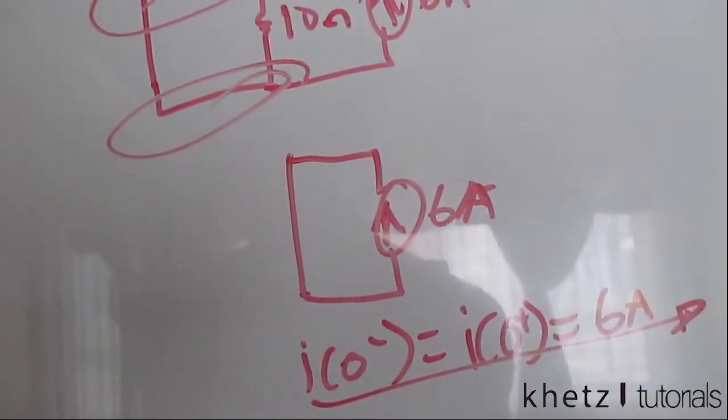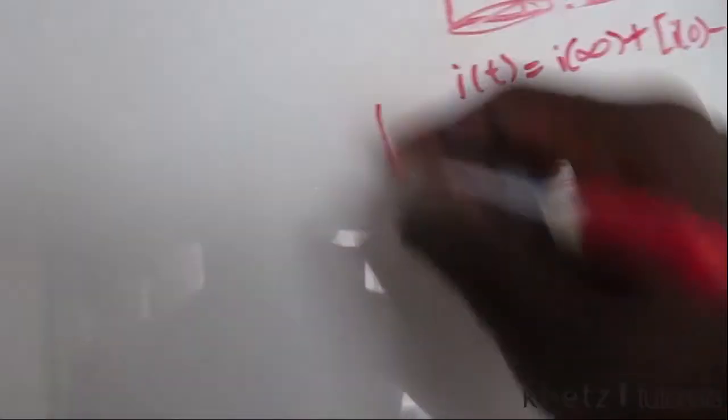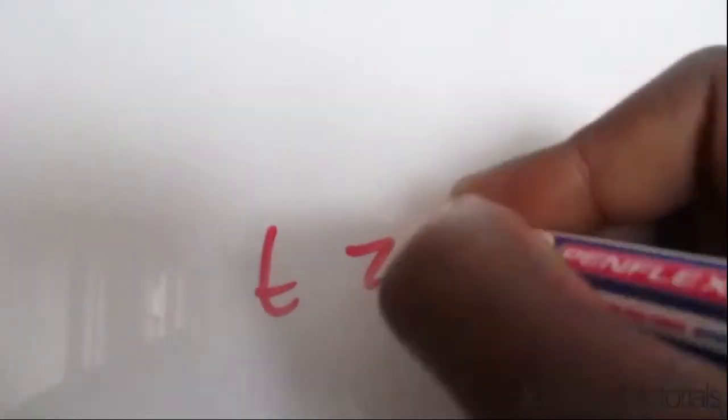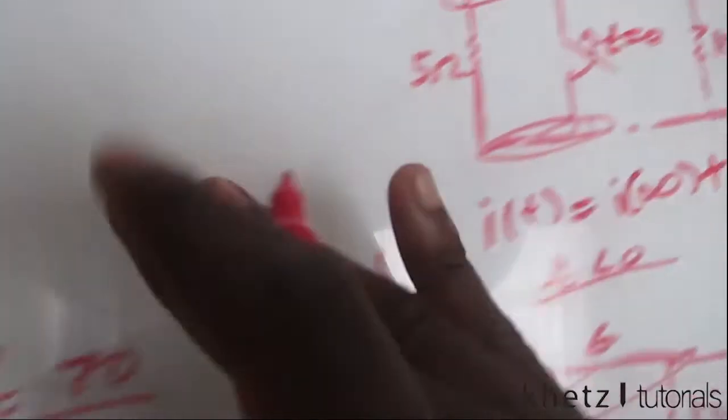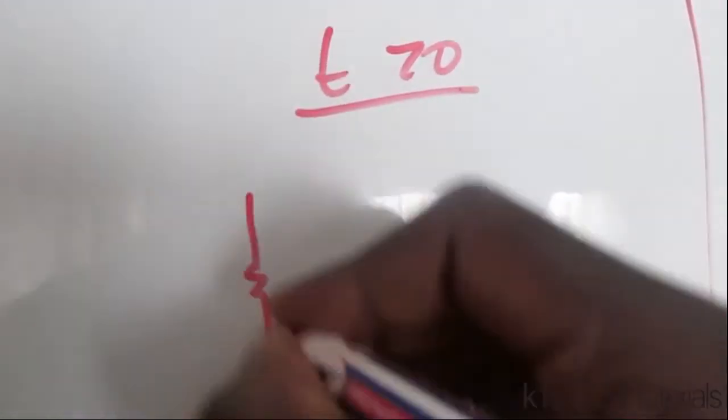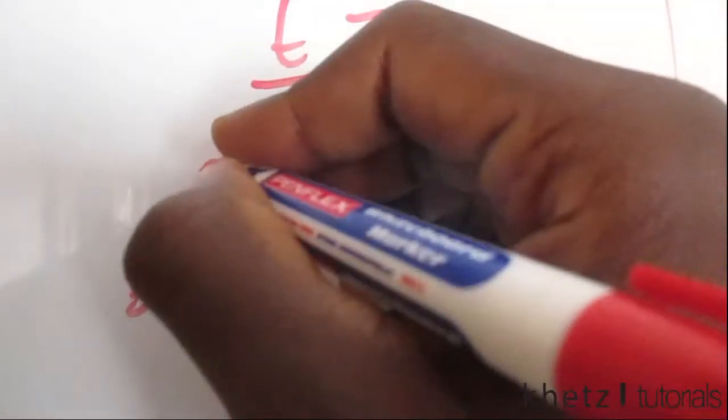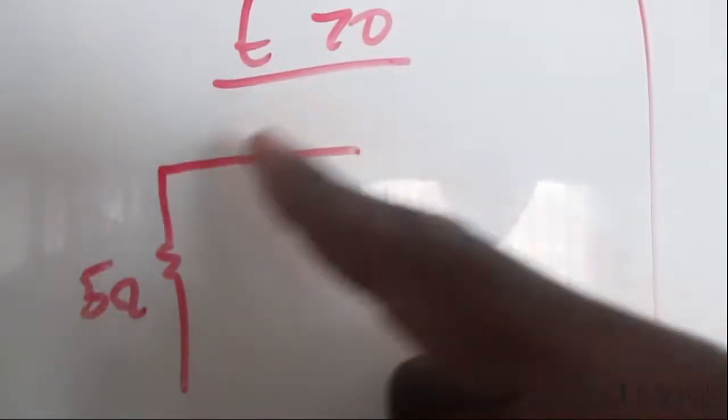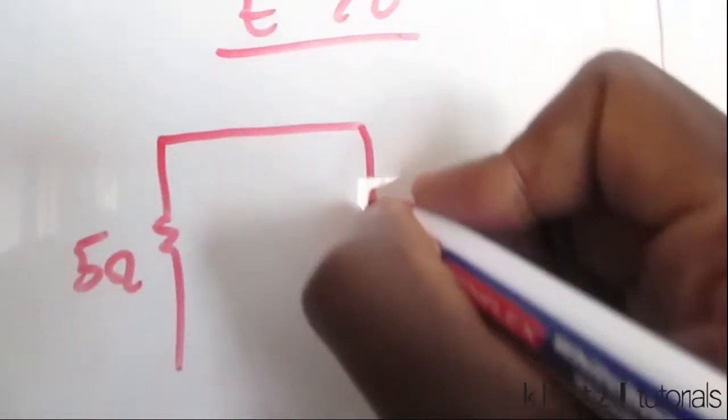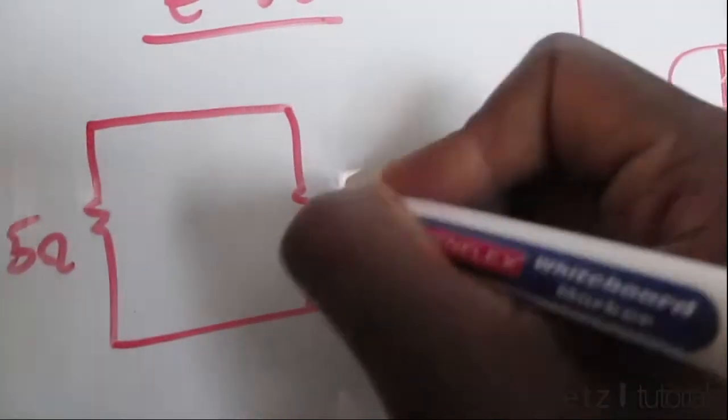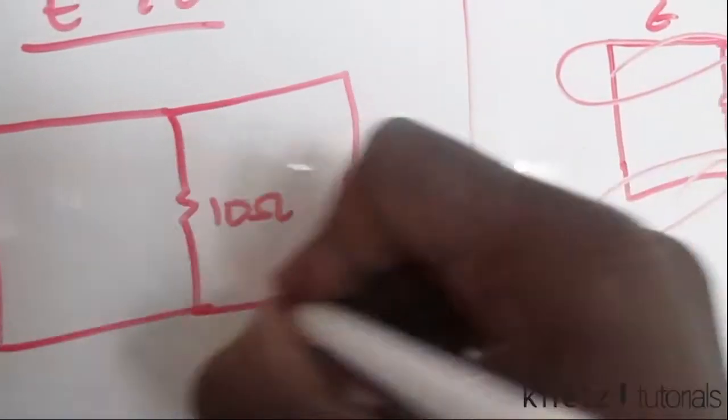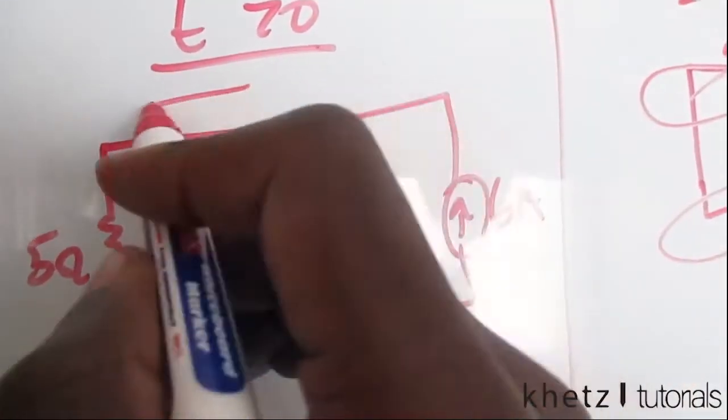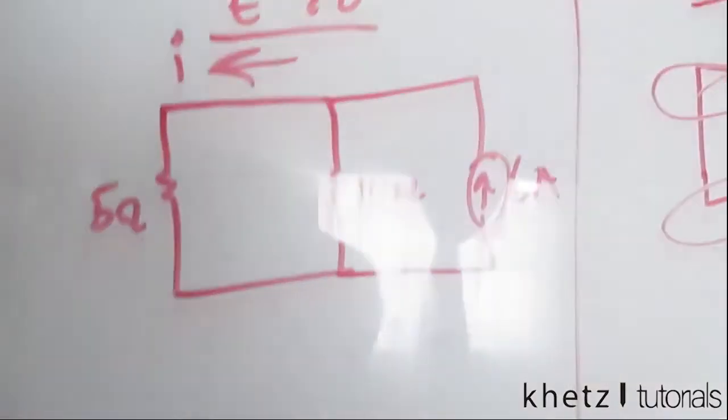That is your initial condition. Now look at time greater than zero. We actually open this switch up and our new circuit is going to look something like this. We have that 5 ohms, then a short circuit again where we had our inductor because it's a short circuit to DC, then this 10 ohms over here, then this current source, and we have our i indicated.